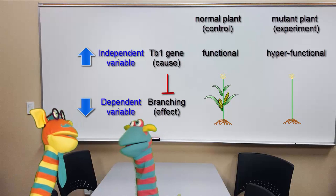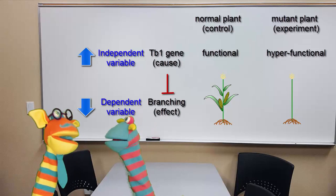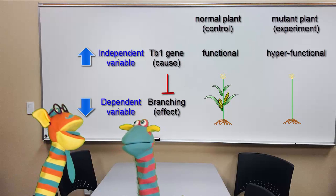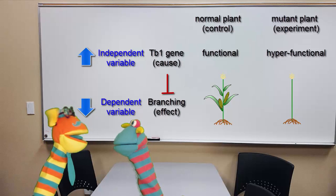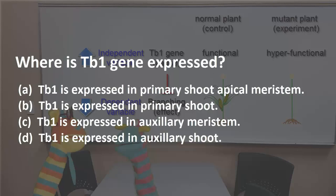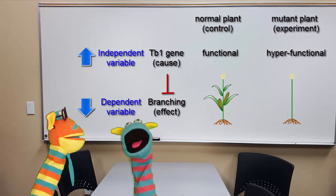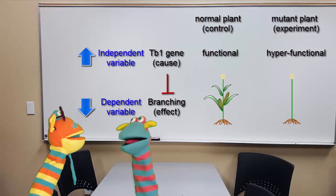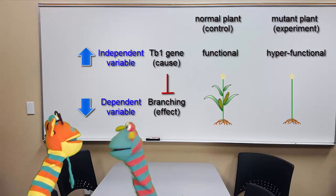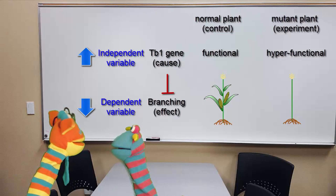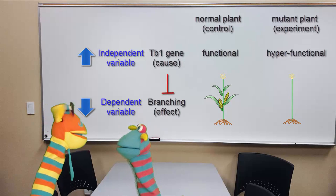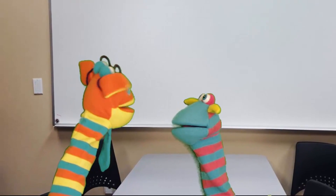Do we need to perform both loss-of-function and gain-of-function experiments? Well, it makes a stronger case. If you can demonstrate that TB1 is both required and sufficient to inhibit branching, you can conclude that TB1 is the major player in this process. Where is the TB1 gene expressed? Well, its function is to inhibit branching, so it has to be there to do the job. I'd expect to find TB1 protein in those cells that have the potential to form branches. When TB1 is there, those cells will not form branches. Exactly. This type of evidence is called correlation. Since we didn't manipulate the level of TB1 gene expression, we simply measured it. Now let's do a quick summary of what we have discussed so far.